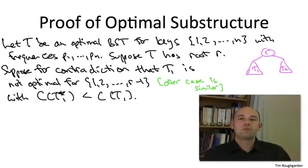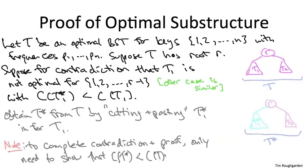Now as usual, the thing which we're going to try to contradict to get the final proof is we're going to exhibit a search tree on all of the keys 1 through n which is even better than T. But T was supposed to be optimal, so that would be a contradiction. How do we get our superior search tree for all of the keys? We're just going to take T and do cut and paste. We're going to do surgery on the tree T, ripping out its left subtree T1 and pasting in this subtree T*1. Call the resulting tree T*.